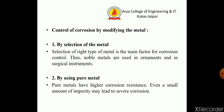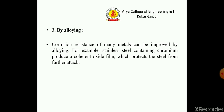Corrosion can also be controlled by modifying the metal. This includes: first, selection of metal — selection of the right type of metal is the main factor for corrosion control; metals used in ornaments and surgical instruments should be chosen carefully. Second, by using pure metal — pure metals have high corrosion resistant power; even a small amount of impurity may lead to severe corrosion. Third, by alloying — the corrosion resistance of many metals can be improved by alloying; for example, stainless steel containing chromium produces a coherent oxide film which protects the steel from further attack.